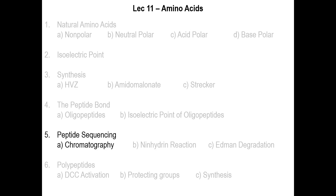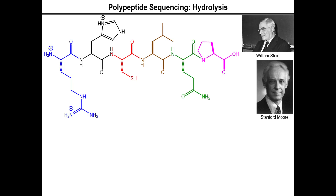Hello again! Time to talk about how to account for the amino acids present in a peptide sequence. The story basically begins with William Stein and Stanford Moore, who pioneered the idea of sequencing amino acids in proteins specifically.